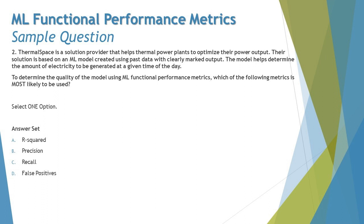The next question we have here is again very straightforward. It's given like a scenario and you have to pick a straightforward answer for that. Question number two: ThermalSpace is a solution provider that helps thermal power plants optimize their power output. Their solution is based on an ML model created using past data with clearly marked outputs. The model helps determine the amount of electricity to be generated at a given time of the day. To determine the quality of the model using ML functional performance matrix, which of the following metrics is most likely to be used?